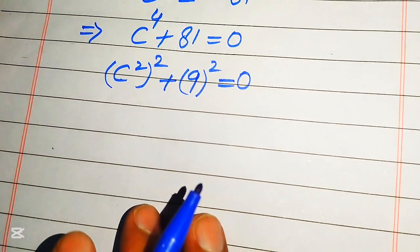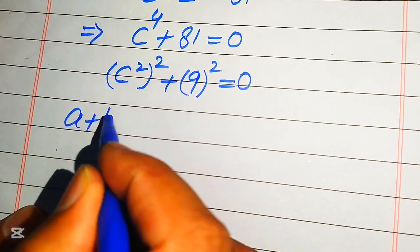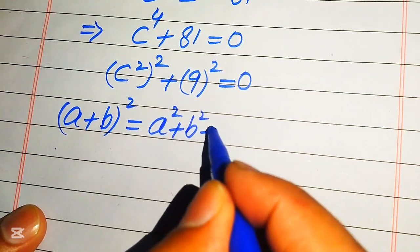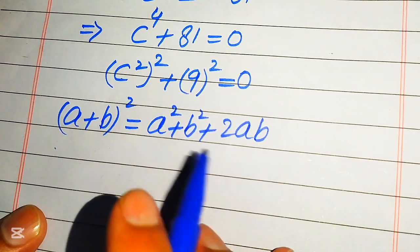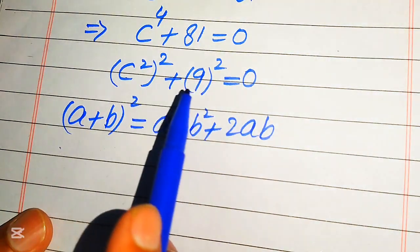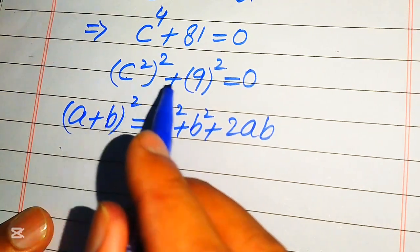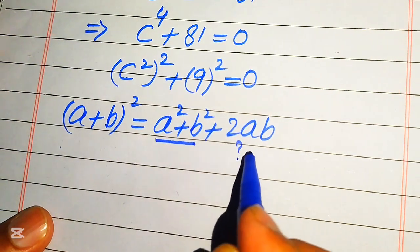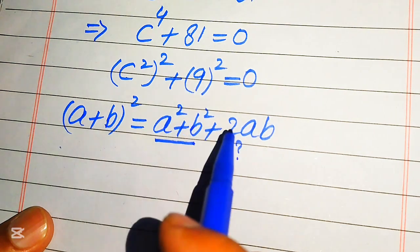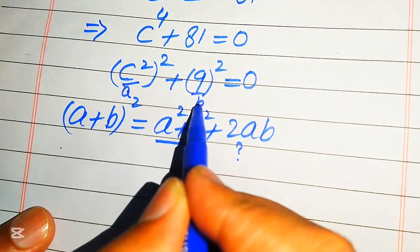Now we need a nice algebraic formula to move forward. We can write the formula: a plus b whole square equals a squared plus b squared plus 2 times ab. We need to use this formula, so according to it we need to complete the square of this term. In order to complete the square of the above term, we have a squared plus b squared and we need the middle term. Our a in this case is c squared and our b is 9.